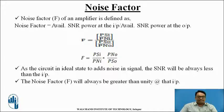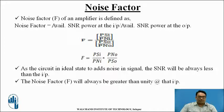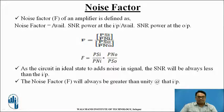Noise factor is considered for the amplifier and it is defined as the ratio of available SNR power at the input to the available SNR power at the output. It is denoted by capital F, and the numerator denotes the SNR power at the input while the denominator denotes the SNR power at the output.